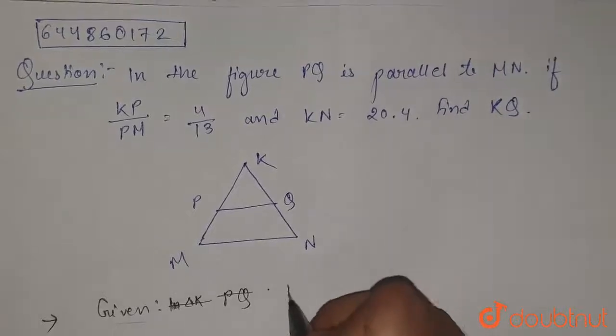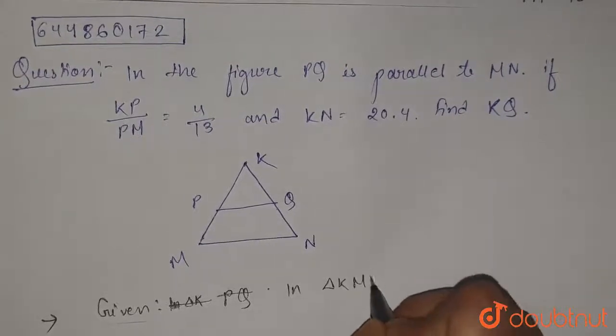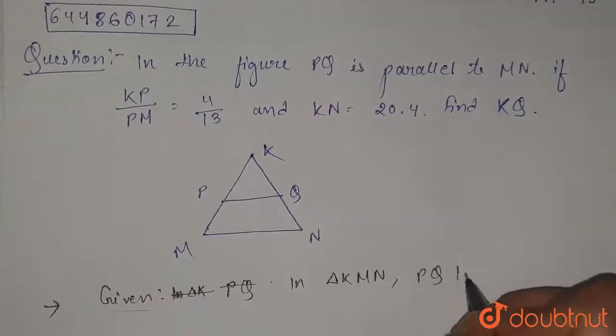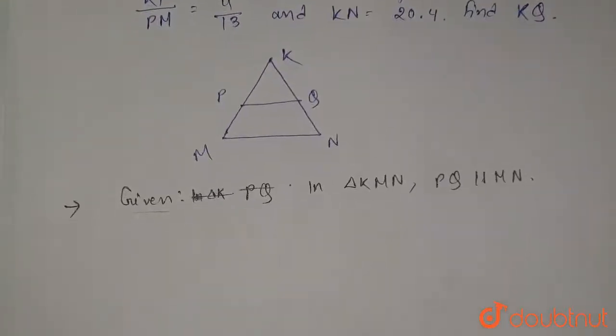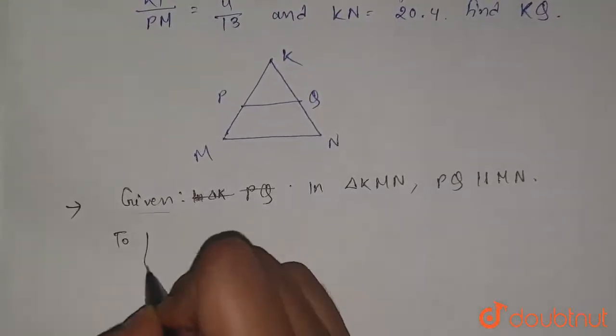So we are given in triangle KMN, PQ is parallel to MN. Okay, now we have to find the value of KQ.